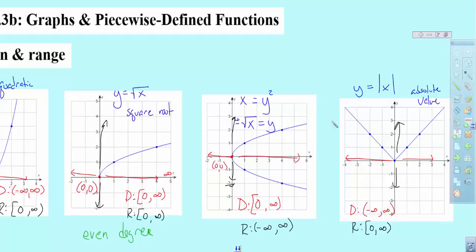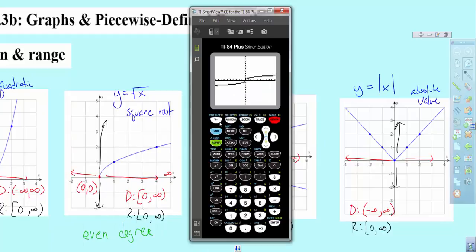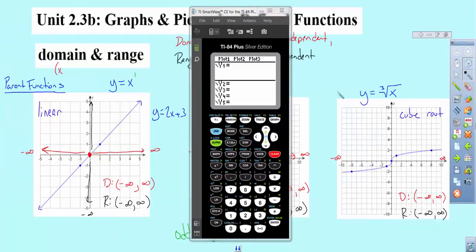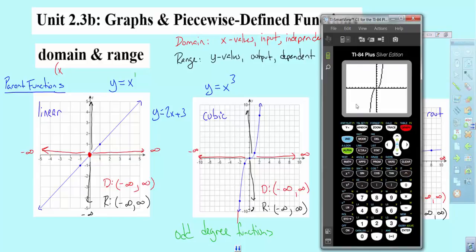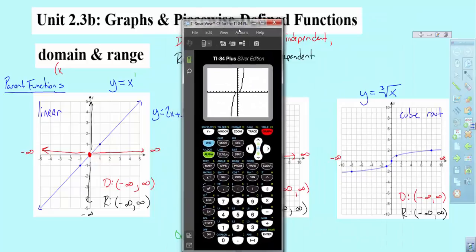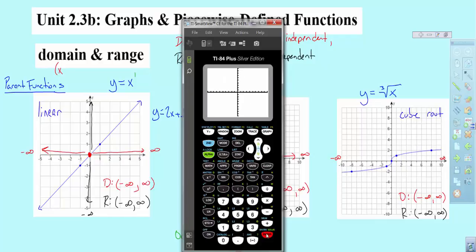At the end of this video, I want to mention that I hope you're starting to use your graphing calculator. If you come across a function and don't know what x cubed looks like, go into your calculator, type in x to the third power, hit graph, and see what the shape looks like so you can start talking about domain, range, and different characteristics. Remember, if your window gets messed up, go to Zoom and choose number 6.